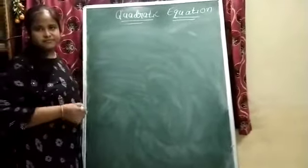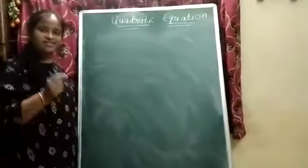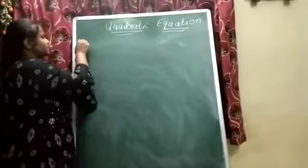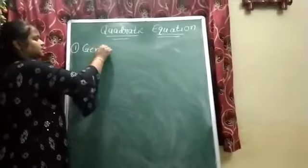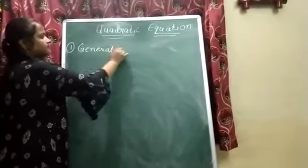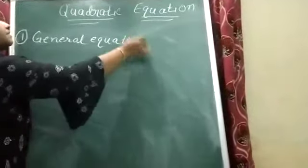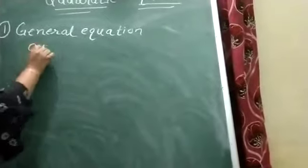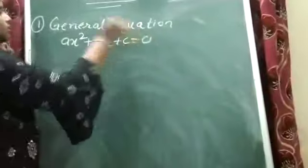We will discuss quadratic equations. A quadratic equation is an equation whose highest power is 2. Its general equation is ax² + bx + c = 0.